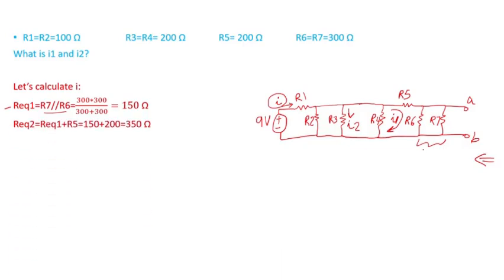R equivalent 1 is in parallel with R5, giving us R equivalent 2. I do the math and calculate that value as shown here.